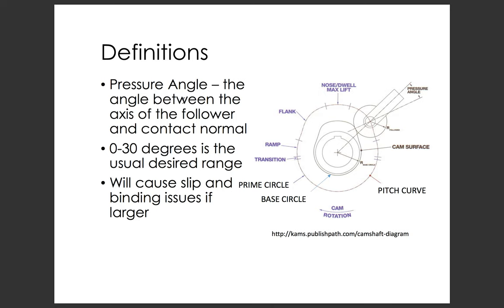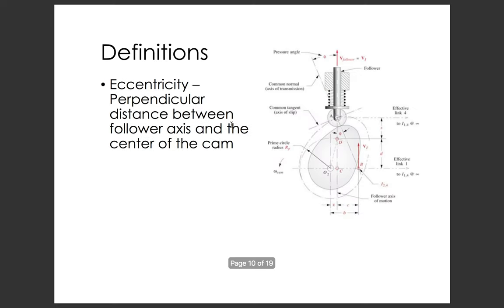Other limiting factors include pressure angle. Pressure angle is the difference between a line formed by the centerline of the cam — the point at which the cam is going to rotate to along the axis of the follower — versus a line normal to the contact plane. Zero to 30 degrees is the good range. Once you start getting past 30 degrees you get weird side loading, binding issues, maybe slip. You want that angle to be close to zero.